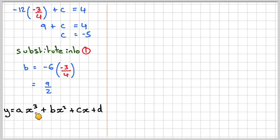The original cubic was ax³ plus bx² plus cx plus d. Putting our values in: a was minus 3/4, so minus 3/4 x³, b is 9/2 x², c was minus 5, and d was 6.